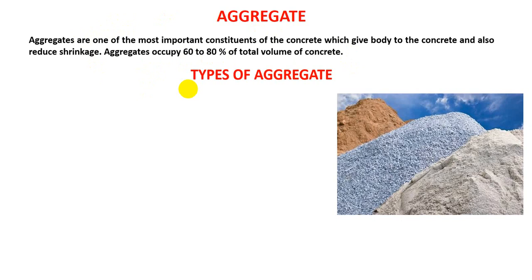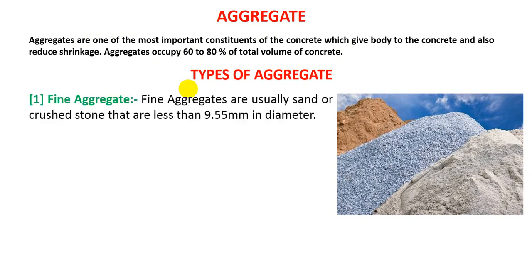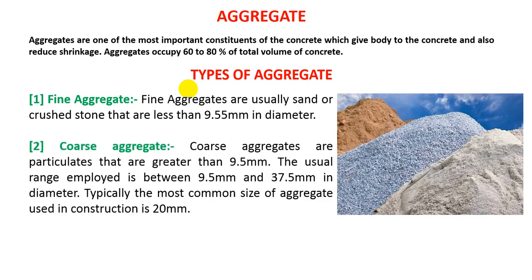So here are the types of aggregate. First of all, fine aggregate. Fine aggregates are usually sand or crushed stone that are less than 9.5 mm in diameter. For coarse aggregate, the diameter is more than 9.5 mm, usually ranging between 9.5 mm to 37.5 mm in diameter.